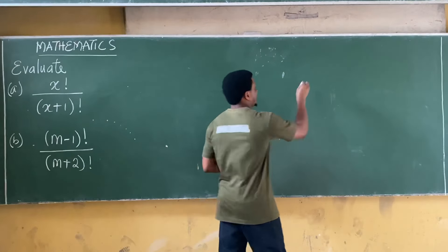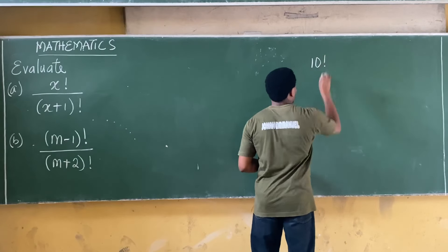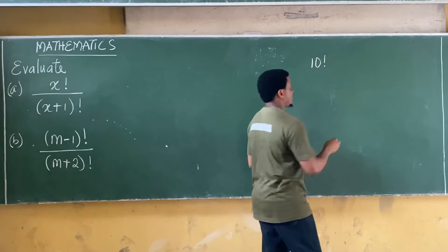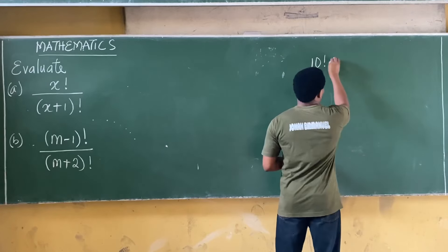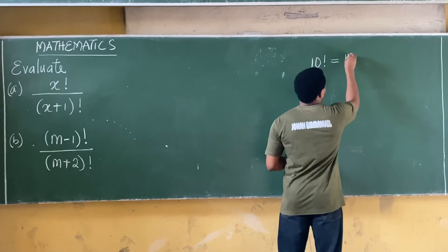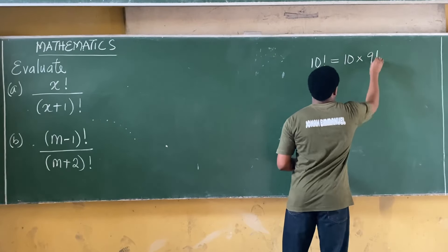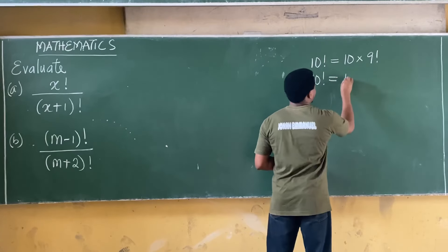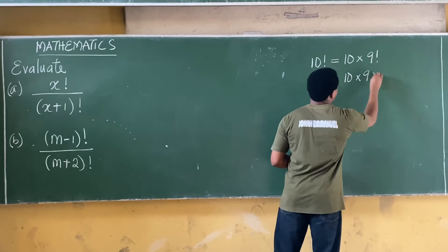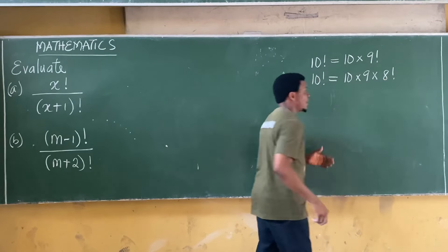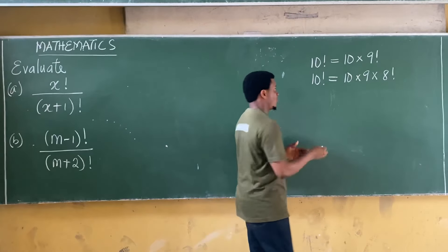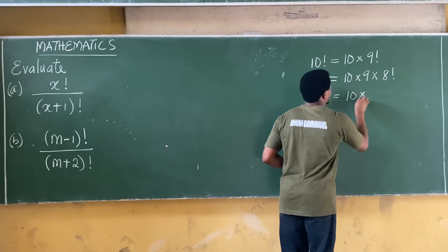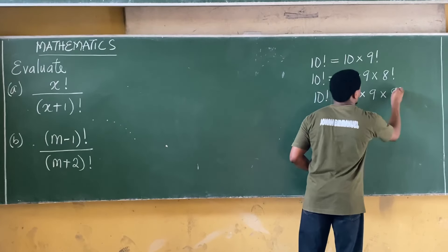In a previous class we discussed that 10 factorial can be expressed in terms of a lower factorial. For example, 10! = 10 × 9!, or 10! = 10 × 9 × 8!.